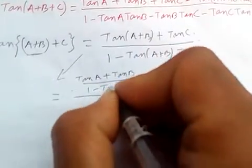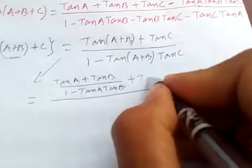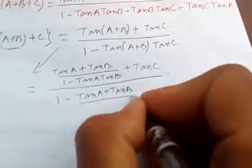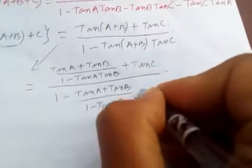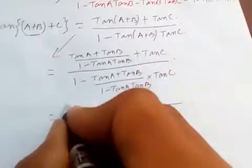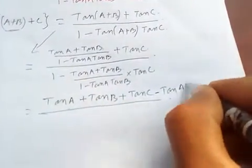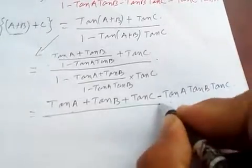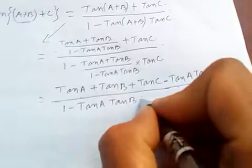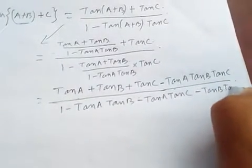So tan(A+B+C) becomes: tan A plus tan B over 1 minus tan A·tan B, plus tan C, all over 1 minus (tan A plus tan B over 1 minus tan A·tan B)·tan C. Simplifying this gives tan A plus tan B plus tan C minus tan A·tan B·tan C, over 1 minus tan A·tan B minus tan A·tan C minus tan B·tan C.